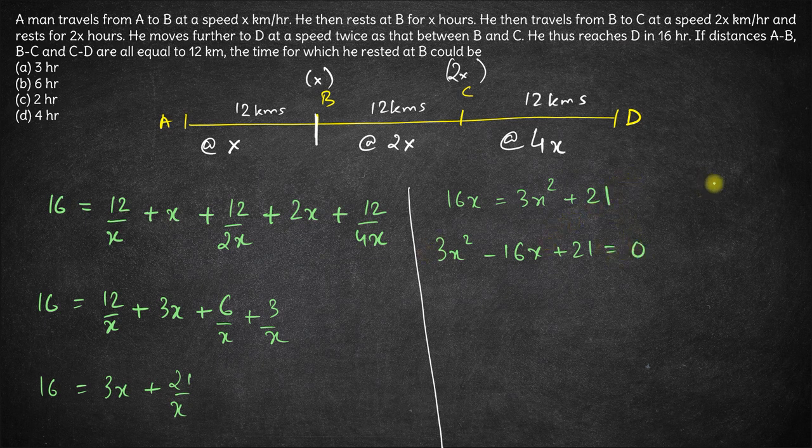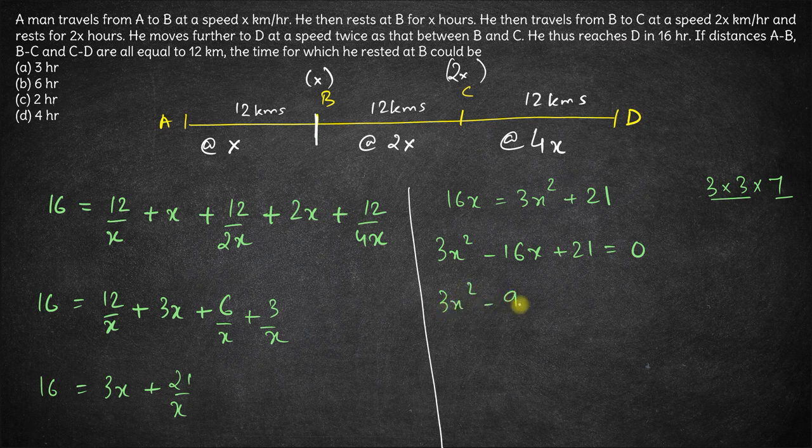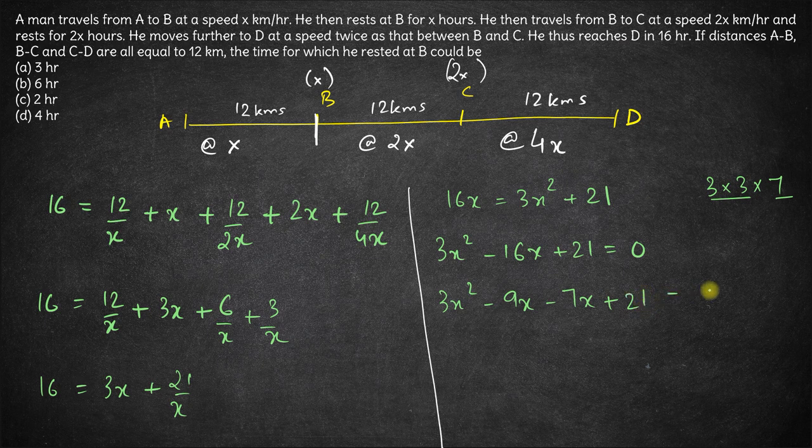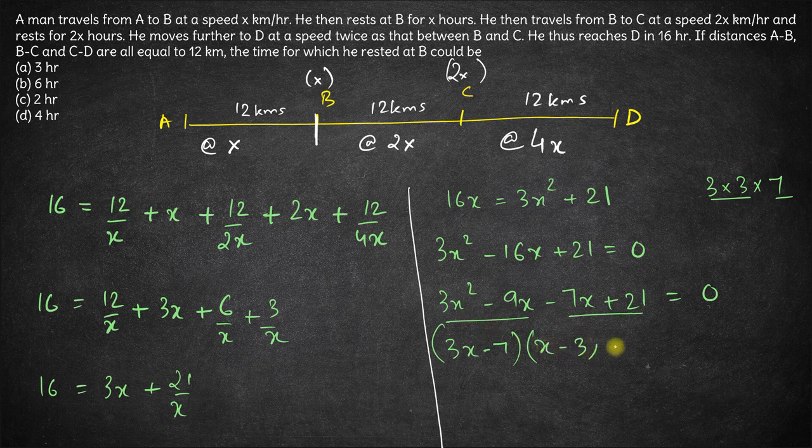So we have 3 into 21 is 3 into 3 into 7. So this is 9 into 7 is 16. So we have 3x square minus 9x minus 7x plus 21 is equal to 0. So taking 3x common from here and taking minus 7 common from here. So we'll get this as factorized as 3x minus 7 into x minus 3 is equal to 0.